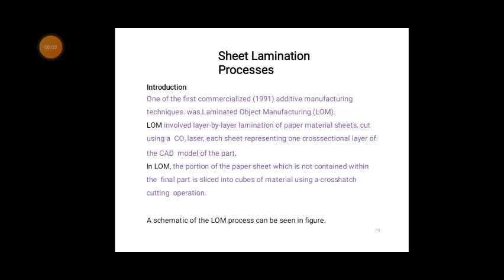Hello everyone. In this video we are going to see one of the important advanced manufacturing processes, that is the sheet lamination process. The sheet lamination process plays an important role in the automobile industry, aerospace industry, and many more industries. It is also one of the first commercialized additive manufacturing techniques, known as laminated object manufacturing.